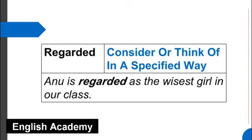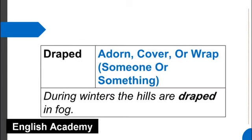Regarded means consider or think of in a specified way. Example sentence: Anu is regarded as the wisest girl in our class. Draped means adorn, cover, or wrap someone or something. Example sentence: During winters, the hills are draped in fog.